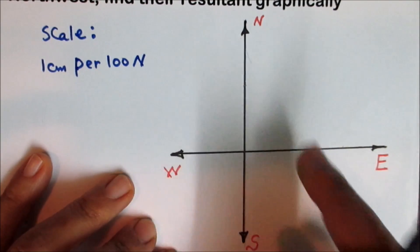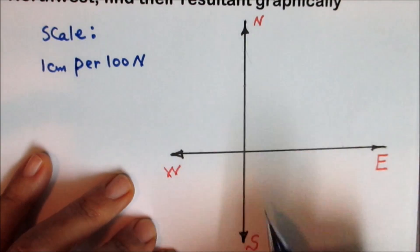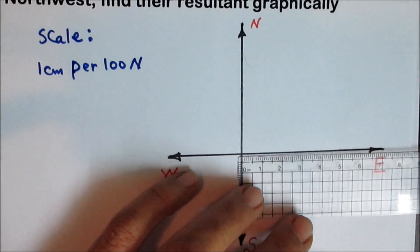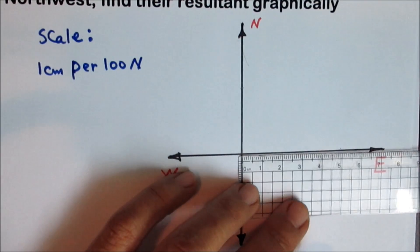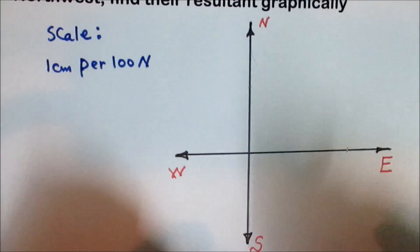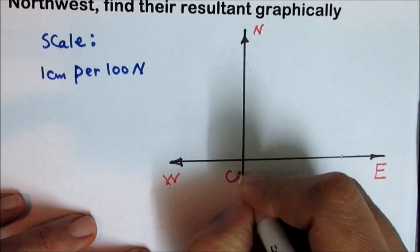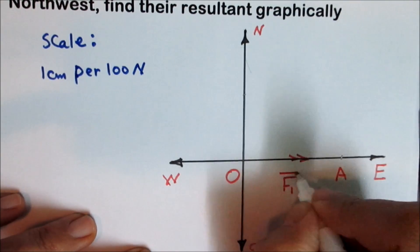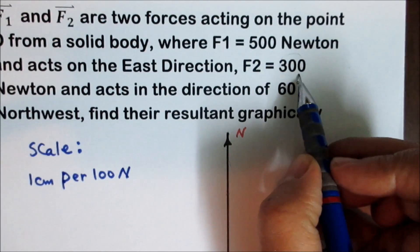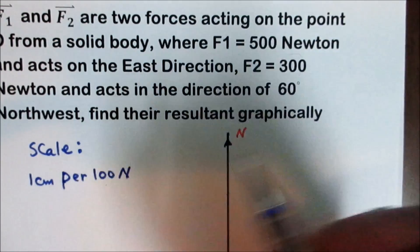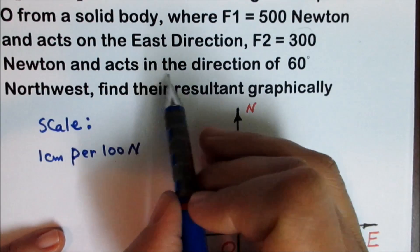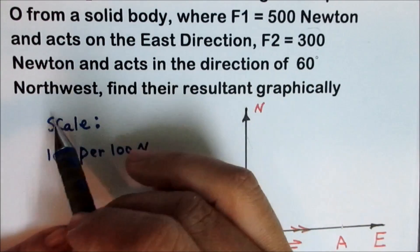Here we have the coordinate plane and the four cardinal directions. F1 acts in the east direction and is represented by 5 centimeters to scale. The origin point is O, and the vector OA represents the force F1. F2 is 300 newtons, so divide by the scale of 100 to get 3 centimeters on the graph, and it acts in the direction of 60 degrees northwest.